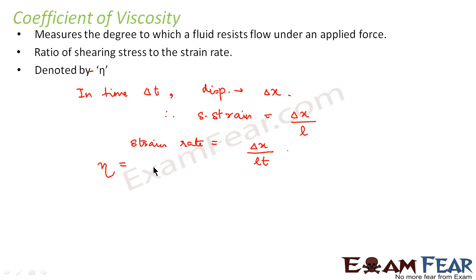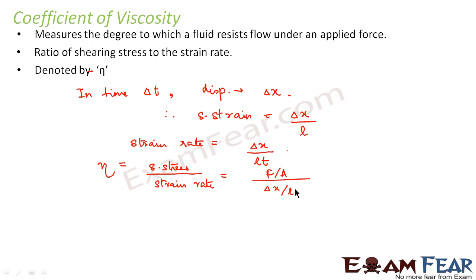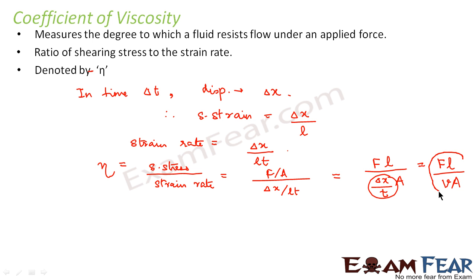Therefore, the coefficient of viscosity eta equals shearing stress divided by strain rate. Shearing stress is force per unit area, and strain rate is delta-x divided by l·t. This gives eta = F·l divided by (delta-x/t)·A. Since displacement per unit time is velocity, this simplifies to eta = F·l divided by v·A. This is the expression for the coefficient of viscosity.